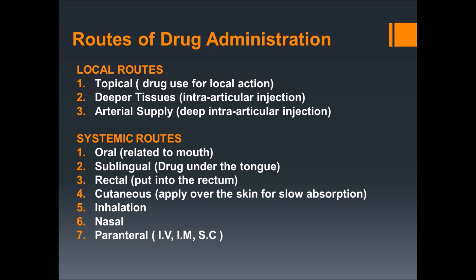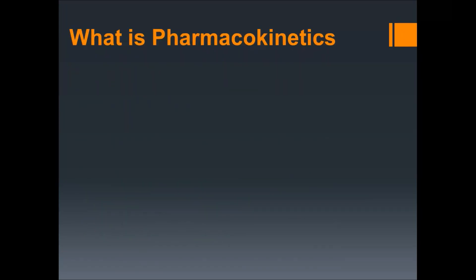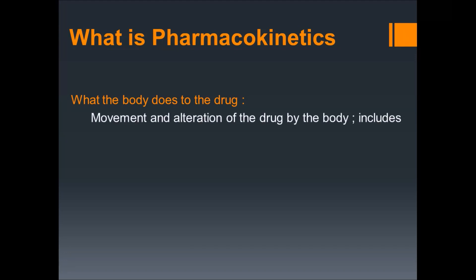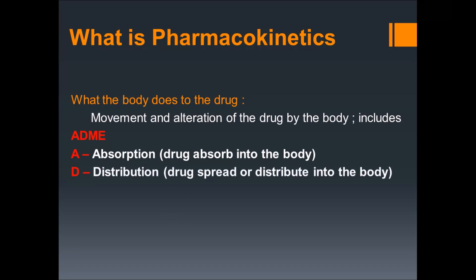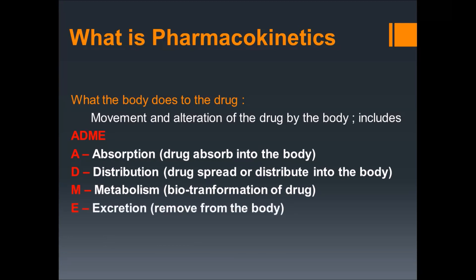Now we will talk about pharmacokinetics — this is basic knowledge you should know. Pharmacokinetics is what the body does to the drug. In simple terms, the body acts on the drug. It includes ADME: A for absorption — the drug is absorbed into the body; D for distribution — the drug spreads or distributes into the body; M for metabolism — that is biotransformation of a drug; E for excretion — the remaining part of the drug is removed from the body.